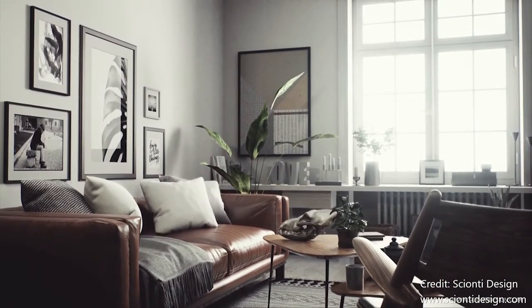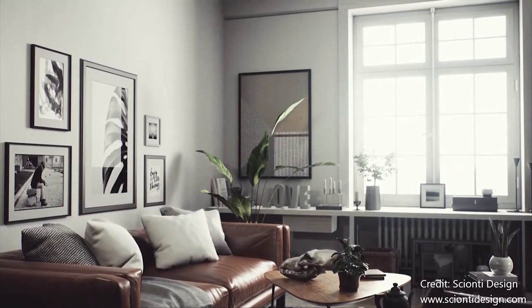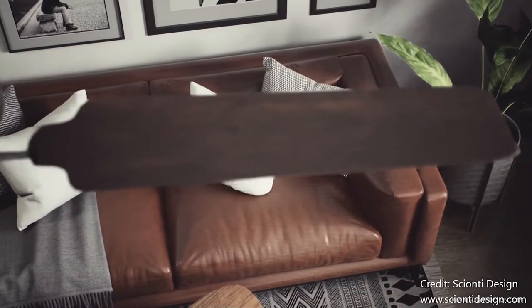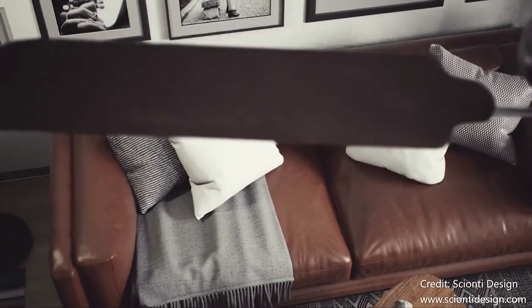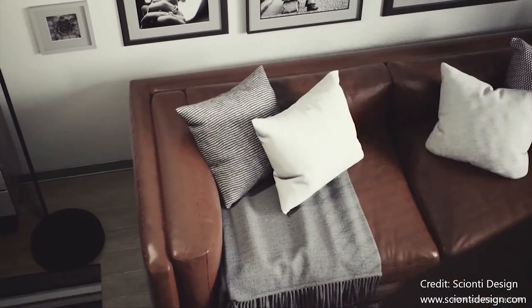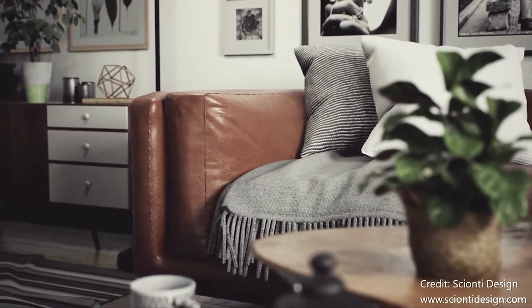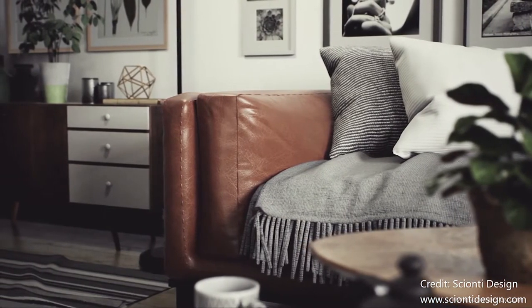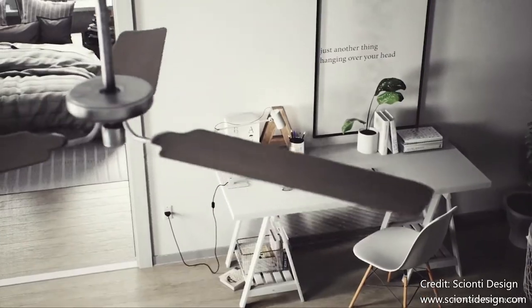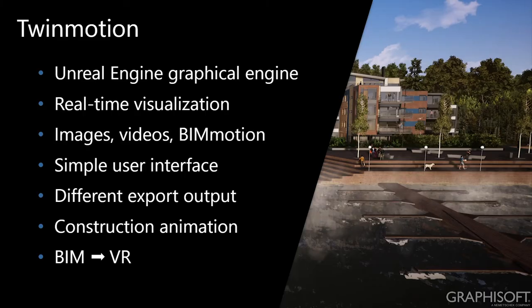Unreal Studio provides us with CGI-like graphical qualities. This is an interior design render made with Unreal Engine — obviously extremely high quality. But they realized they also wanted something for the average architect, who is much more interested in having an interactive, straightforward solution for visualization tasks and something fun to play with. So for that, they have Twin Motion, which uses the Unreal graphical engine but also provides real-time visualization with a very straightforward and simple user interface.